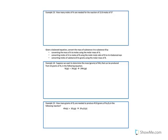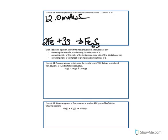Example 13 is an example from the previous page. It asks how many moles of iron are needed for the reaction of 12 moles of sulfur. From our previous equation, we had 2 solid iron plus 3 solid sulfur giving us 1 Fe2S3. According to the balanced equation, for every 3 moles of sulfur, we need 2 moles of iron, giving us a conversion factor of 3 moles of sulfur for every 2 moles of iron.